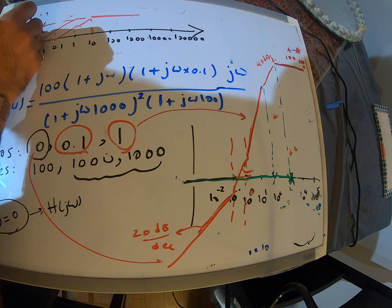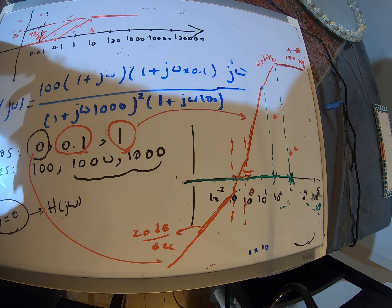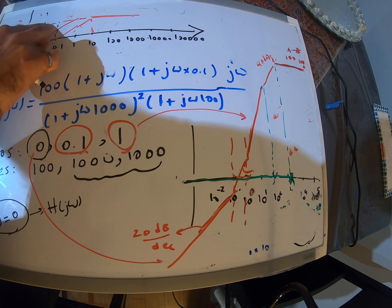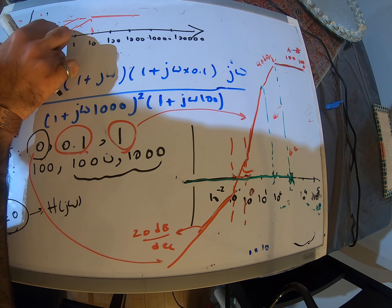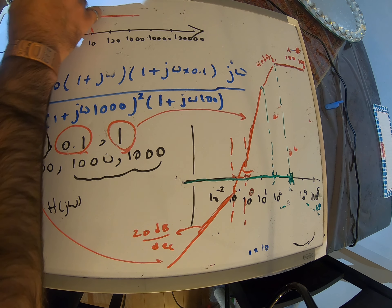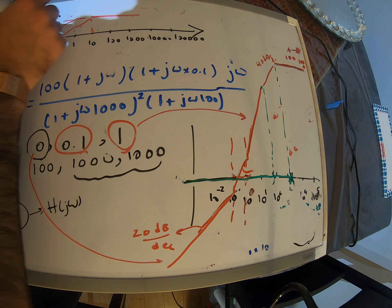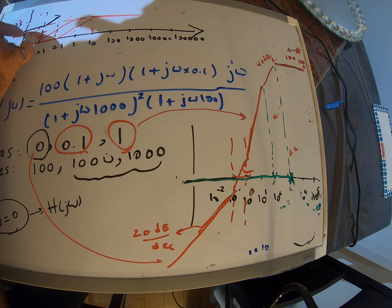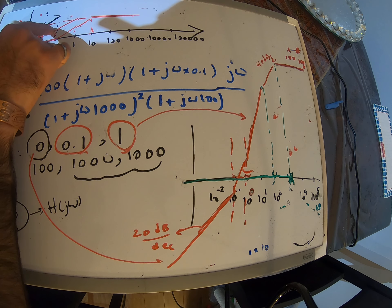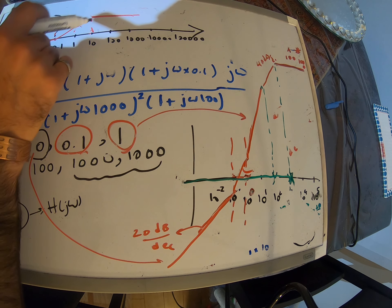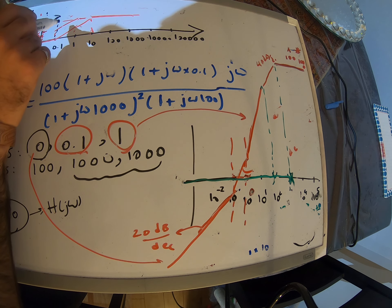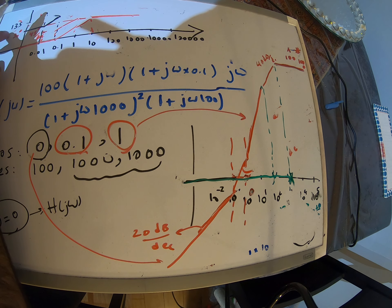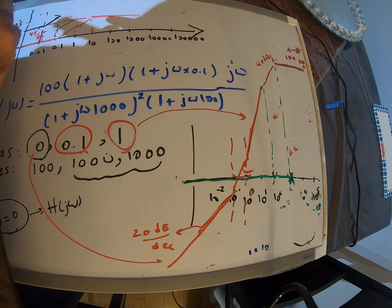Up to 0.01 you only have 90 degrees. Up to 0.1 we have 90 degrees here, but it's also increasing with 45 degrees per decade, so at this point it's going to reach 135 degrees. After one decade it's going to be 90 plus 45. We have two ramps, one of them 45 and the other one also 45, so it's going to go 90 degrees per decade. We are at 135, and 135 plus 90 is going to be 225.